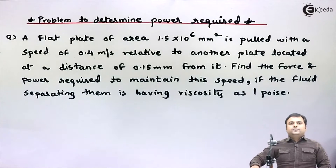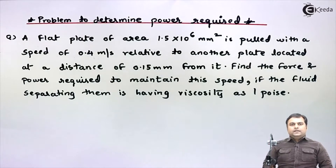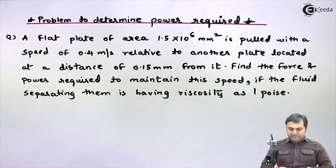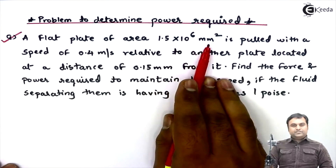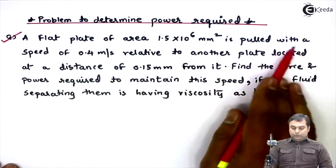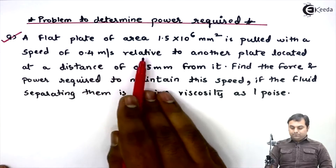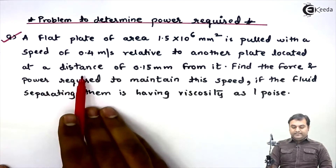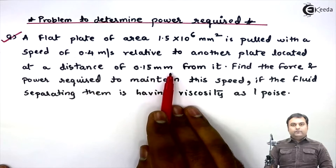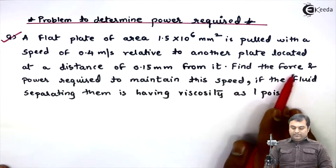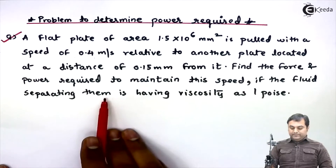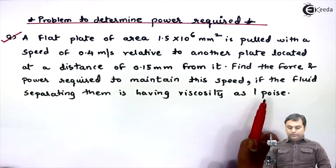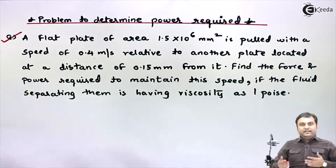Hello friends, in this video we will see how to calculate power required. Let's read the question: a flat plate of area 1.5×10⁶ mm² is pulled with a speed of 0.4 m/s relative to another plate located at a distance of 0.15 mm from it. Find the force and power required to maintain this speed if the fluid separating them has viscosity of one poise.